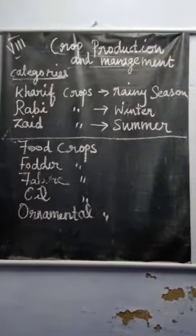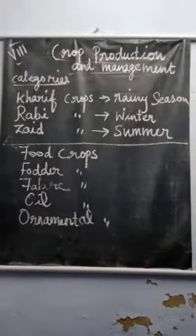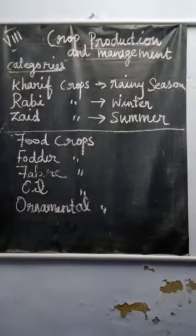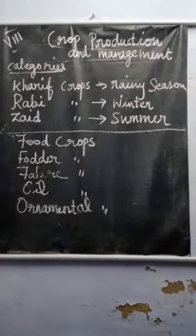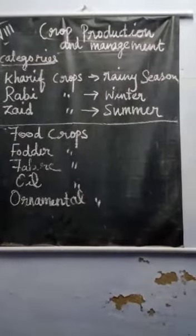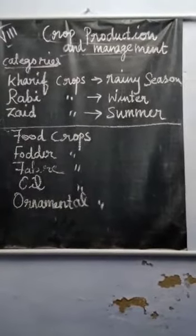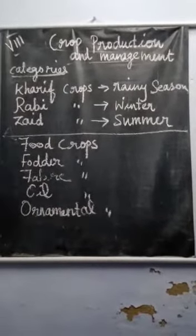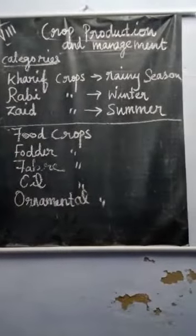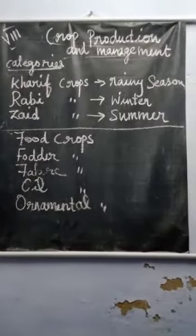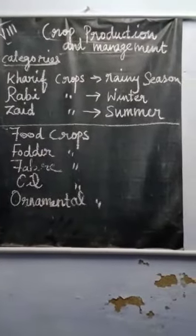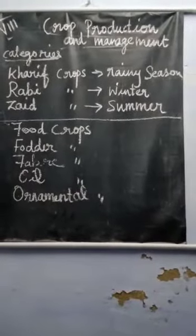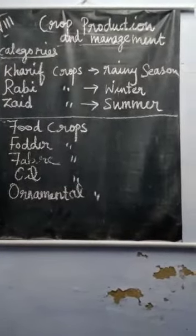The next classification is types of crops depending upon utility. The first type is food crops — paddy and maize are examples because they are cultivated for human usage. The second type is fodder crops, which are useful for livestock consumption. Millets are an example; they can be stored for a long time.